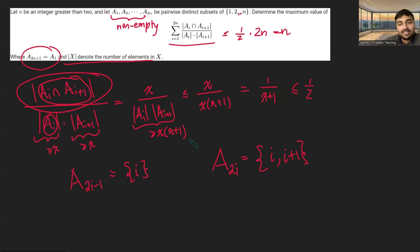They all have it. None of them are empty. And I guess also here we should just clarify the a2n here. So when i is n, this is n and 1, for example.